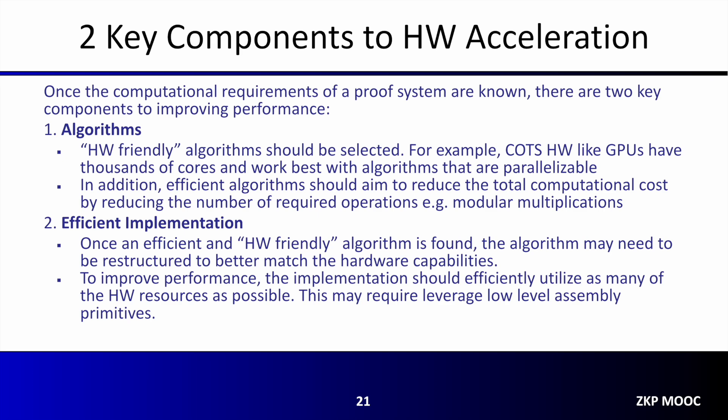Finally, with a firm understanding of the computational requirements of your proof system and a target hardware platform identified, there are two key areas to focus on for successful hardware acceleration. The first is the selection of a hardware-friendly algorithm that fits the target platform — platforms like GPUs and FPGAs have thousands of cores and work best with algorithms that are highly parallelizable, and you should choose an algorithm that reduces the total computational cost by reducing the number of required operations. Once an algorithm is selected, the final step is creating an efficient implementation, which may require restructuring algorithms to better match hardware capabilities and employing low-level assembly primitives to more fully utilize hardware resources.